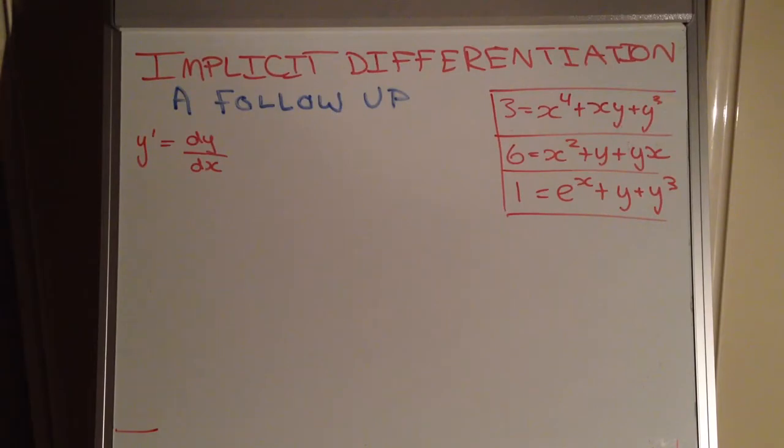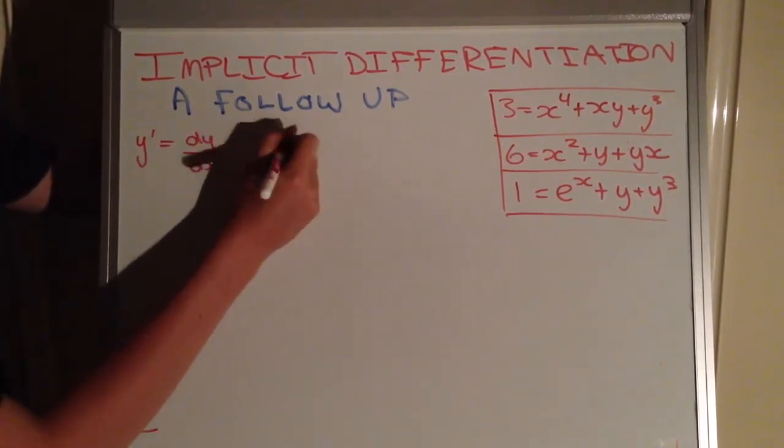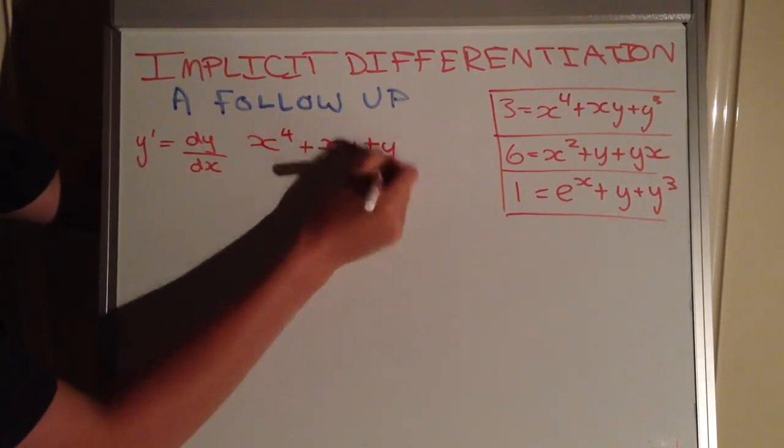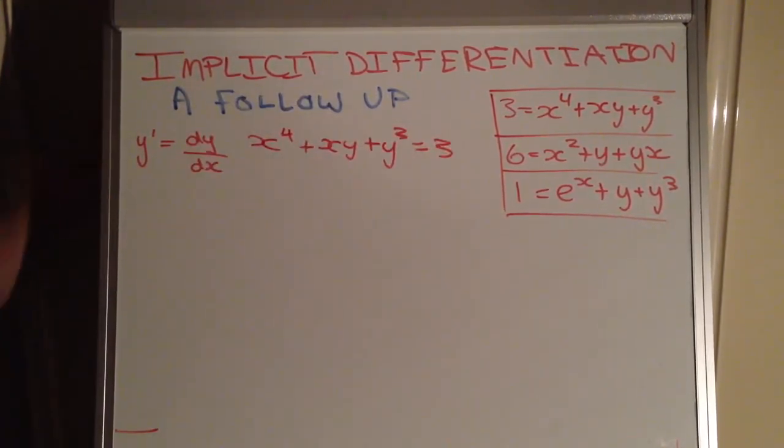Okay, so now we can evaluate our first problem here, so x to the 4 plus xy plus y to the 3 equals 3. What we do is we go through term by term and work out what's the derivative, and from that we can work out dy over dx. Now in this video I won't be going into how we can use Implicit Differentiation to find the slope of the tangent. However, if you do want a video about that, just leave it in the comments. This is more about the art of just finding the first derivative rather than applying it to the slope of the tangent.